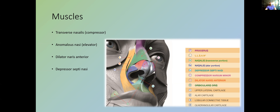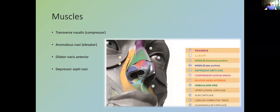If the tip moves inferiorly on smiling, that indicates a muscle issue — so botulinum toxin is your way forward first. Review the patient two weeks later, then consider dermal fillers. The depressor septi muscle attaches at the base of the nose and infratip region and pulls the tip down on animation. Two and a half to five units of botulinum toxin into this region normally works like magic. Using toxin, we can also address the alar-to-alar width using the compressor muscles.